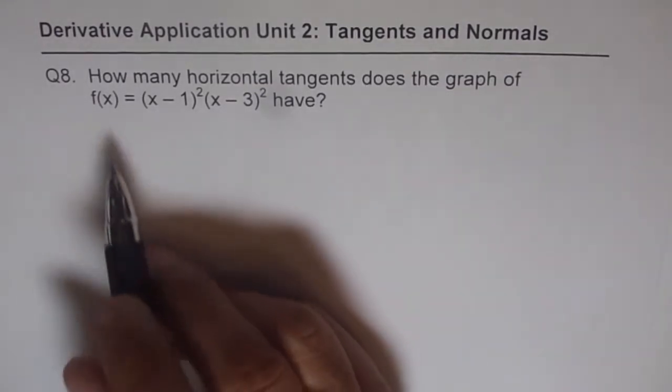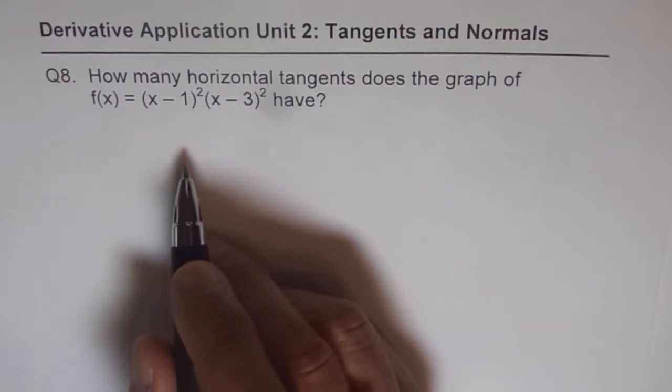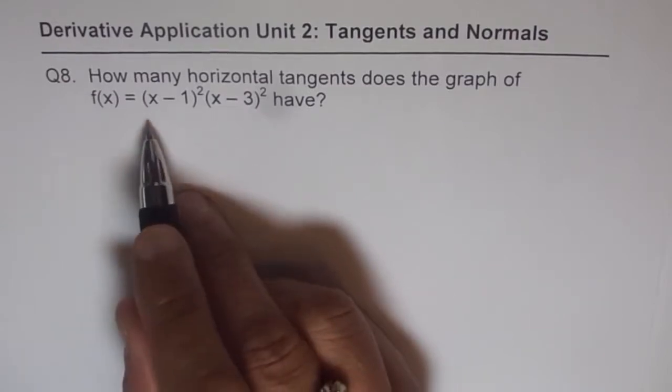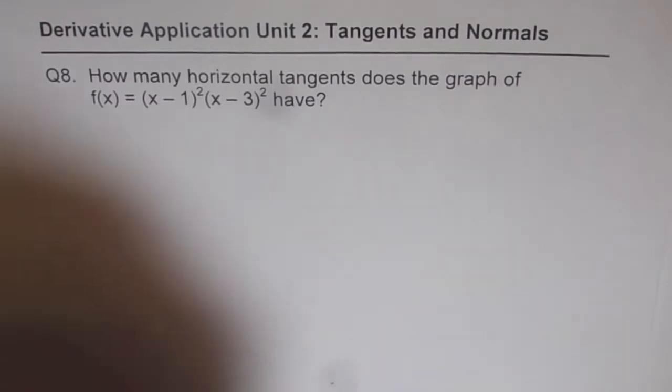So, basically, we should find the derivative of this function, equate it to 0, and then figure out how many values of x can satisfy it. Then we know how many tangents can have 0 slope for this given function.